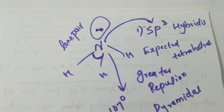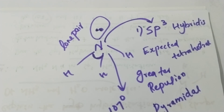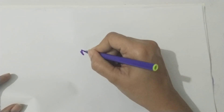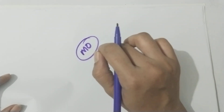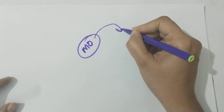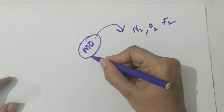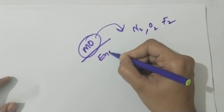Molecular orbital theory: we need to study the molecular orbital energy level diagram. This is very important for nitrogen, oxygen, and fluorine. From the diagram, you can find the bond order for these molecules.